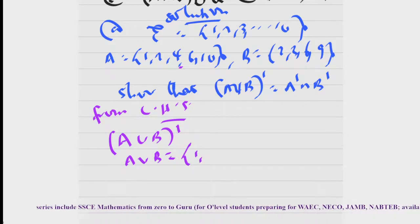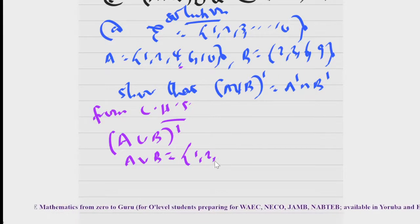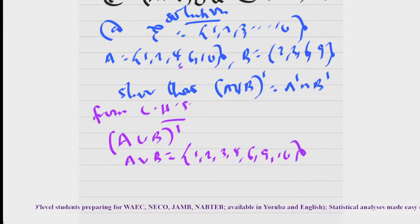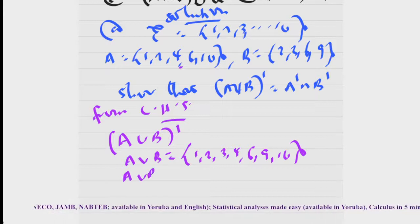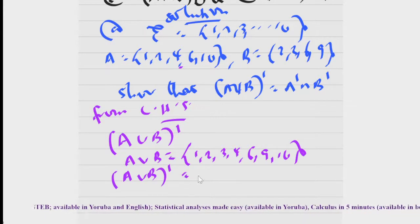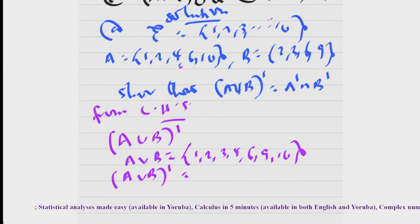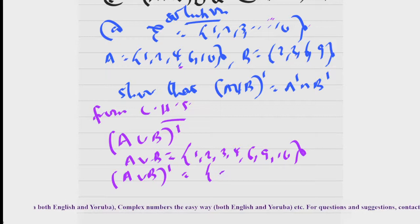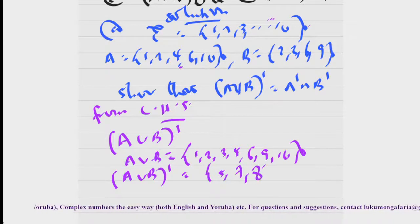So then it means my A union B complement is what? From the definition, that is the elements in the universal set that are not in A union B. The universal set contains elements from one to ten that are not in this set. What are they? You have five, seven, eight — just three of them.